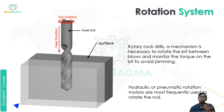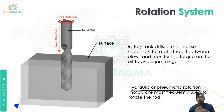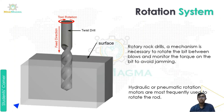Hydraulic and pneumatic rotation motors are most frequently used to rotate the rod, as seen on the left side of the diagram.